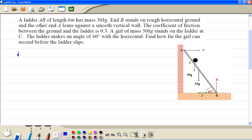Step 1. We resolve it vertically. So the force acting up is R and the force acting downwards is 50g plus 30g, thus equal to 80g.